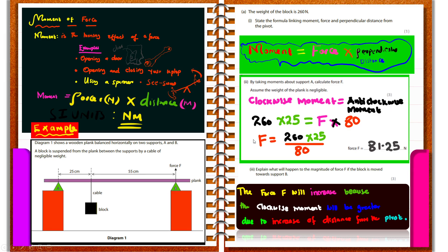The clockwise moment is 260 times 25, since A is the pivot and the distance from the pivot to where the cable pulls down is 25. The distance from where F acts to the pivot is 80, because you add 25 plus 55. So the anticlockwise moment is F times 80. Dividing both sides by 80, the answer is 81.25 newtons.